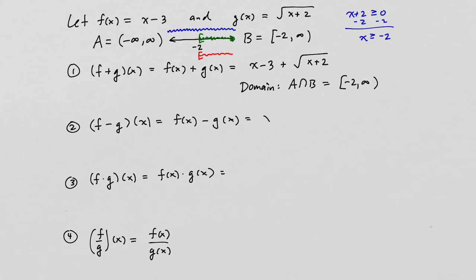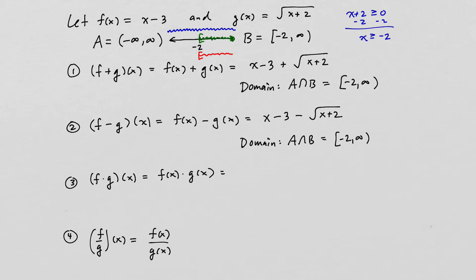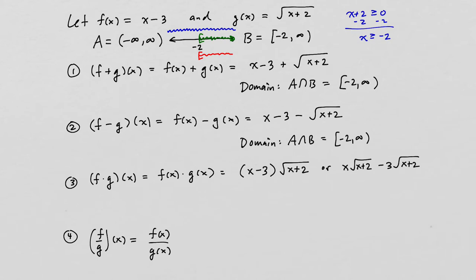For f minus g, we take f of x minus g of x: that's x minus 3 minus the square root of x plus 2. We can't combine anything, and its domain is again A intersect B, all numbers from negative 2 to infinity. For f times g, f is x minus 3 multiplied by the square root of x plus 2. You can leave it like that, or multiply it out as x times the square root of x plus 2 minus 3 times the square root of x plus 2. The domain is once again negative 2 to infinity.